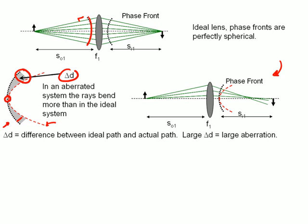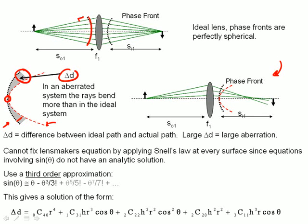Again, this is shown perhaps a little bit better in this image here, where the black dashed line is the ideal phase front, and the red dashed line is the aberrated phase front that you're actually going to get.